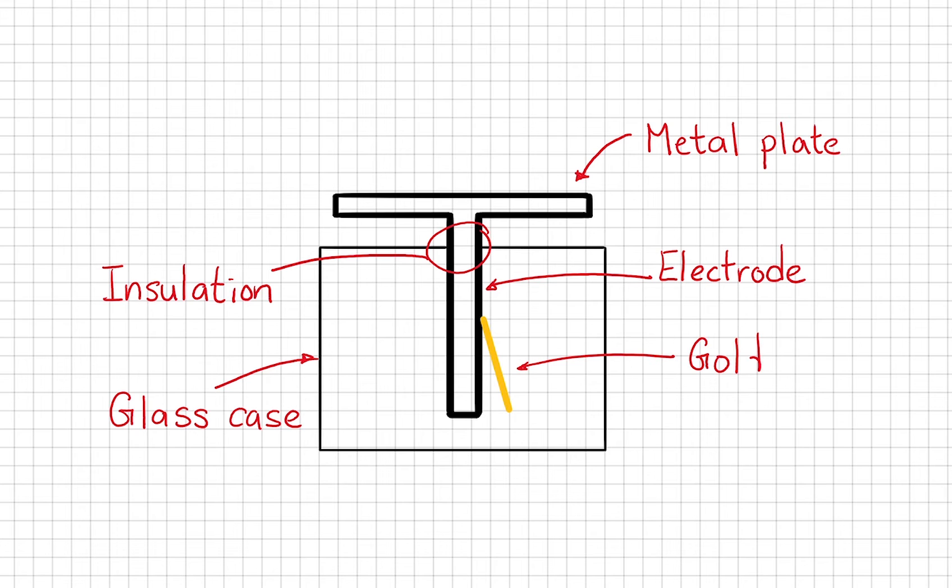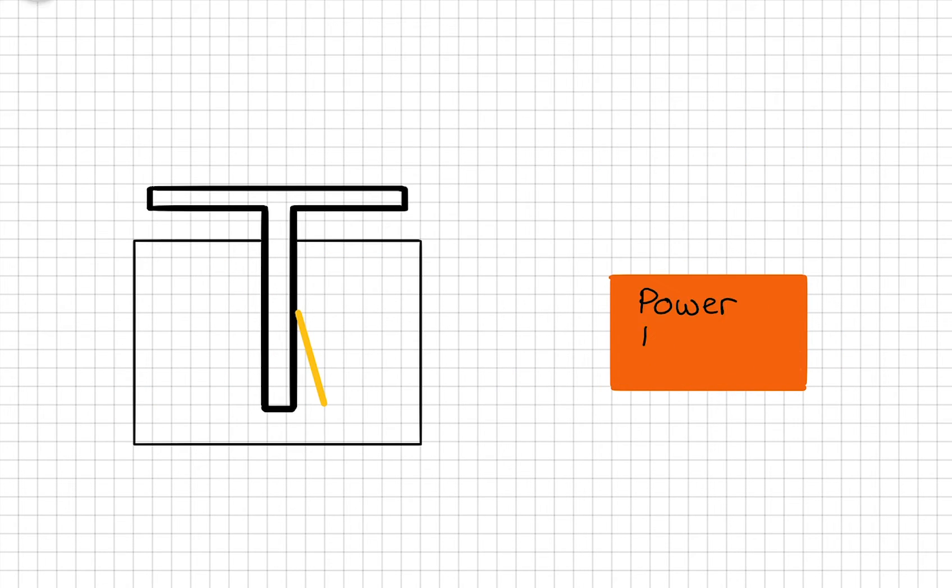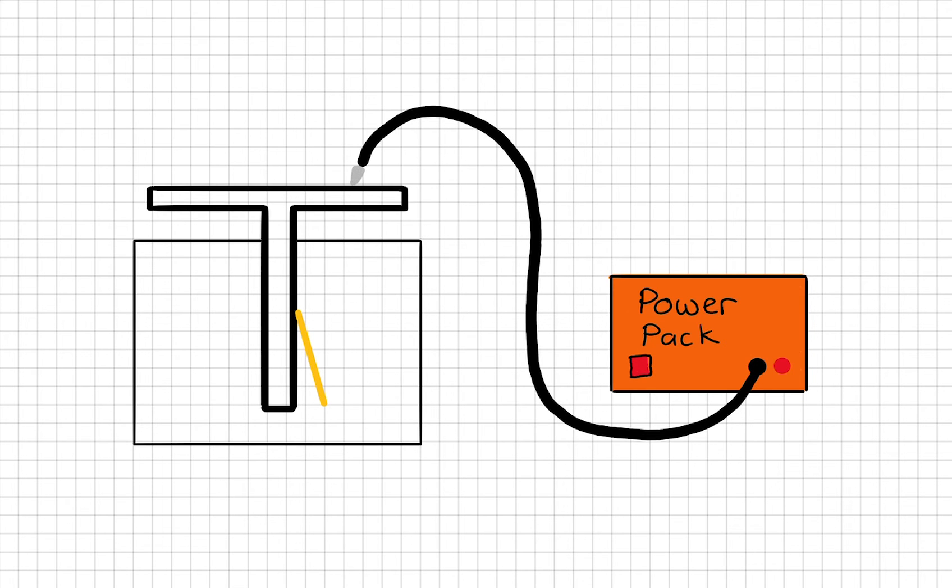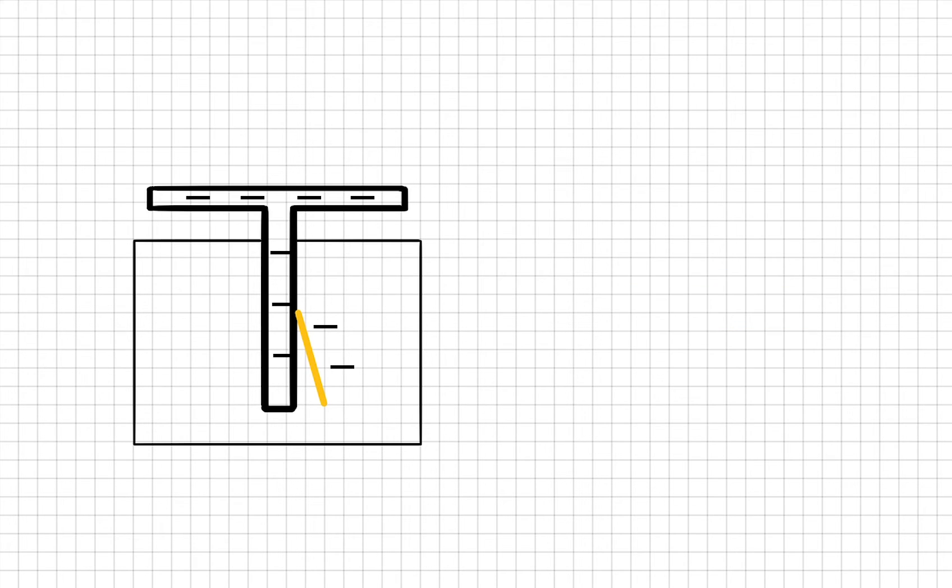There is a thin piece of gold leaf attached to the electrode. If I charge my electroscope by tapping the negative terminal of a power supply on the metal plate, negative charge, or electrons, would travel through the metal plate down to the electrode and to the gold leaf. Since both the electrode and the gold leaf are negatively charged, they will repel each other. That's not quite unusual. We know that like charges repel.